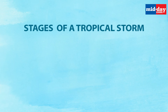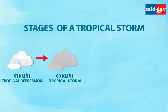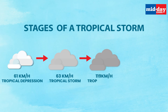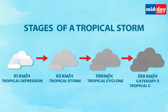Stages of a Tropical Storm: at 61 km per hour — Tropical Depression; at 63 km per hour — Tropical Storm; at 119 km per hour — Tropical Cyclone; at 250 km per hour — Category 5 Tropical Cyclone.